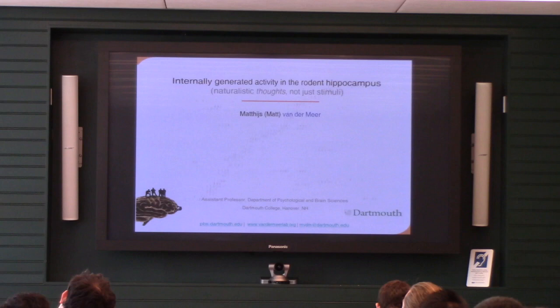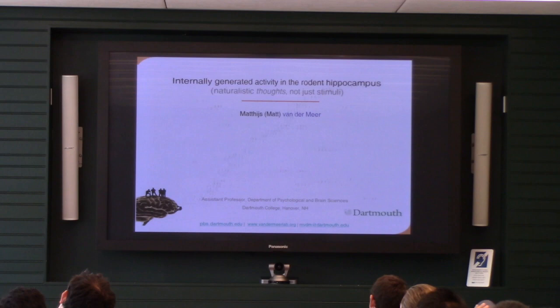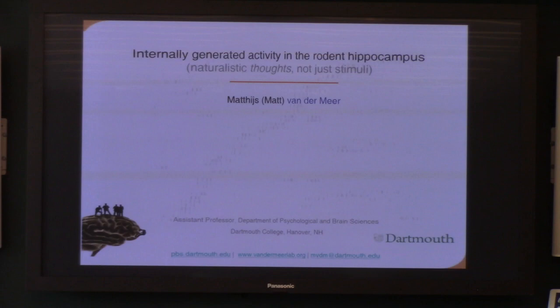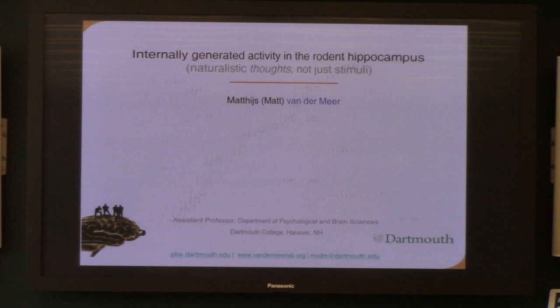In my lab, we work on rats and the kind of thoughts that rats have. Even though the emphasis in this summer course is on naturalistic stimuli, the brain is not just there to respond to stimuli. The brain is always generating its own activity, generating thoughts all the time. So let's try to think about what naturalistic thoughts look like. What is the structure of internally generated activity in the brain? The rodent hippocampus has served as a model system for appreciating what patterns are spontaneously generated by brain structure. Can we access the contents and structure of those patterns?